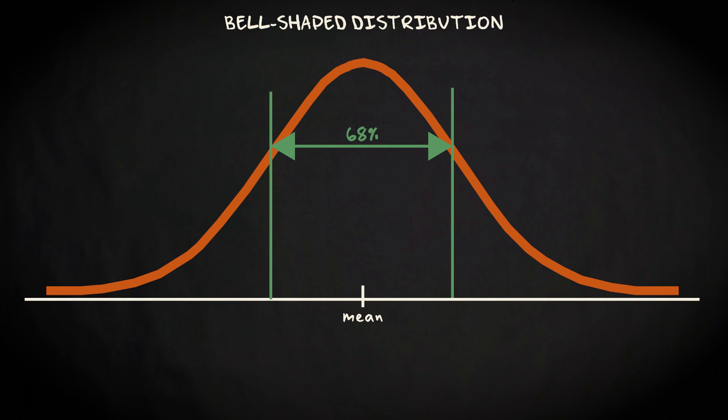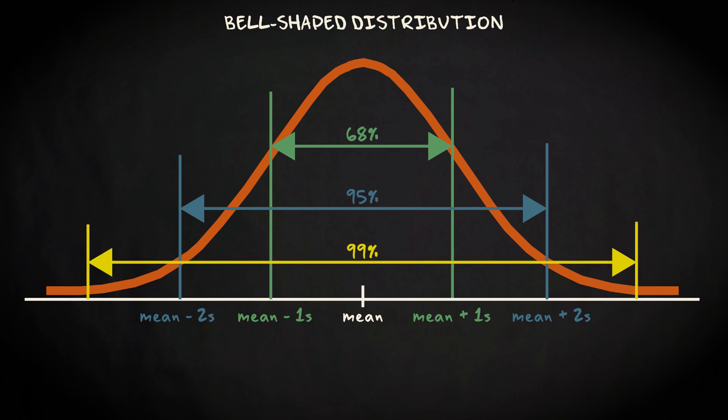68% of the observations fall between z-scores of minus 1 and 1, 95% between z-scores of minus 2 and 2, and 99% between z-scores of minus 3 and 3.